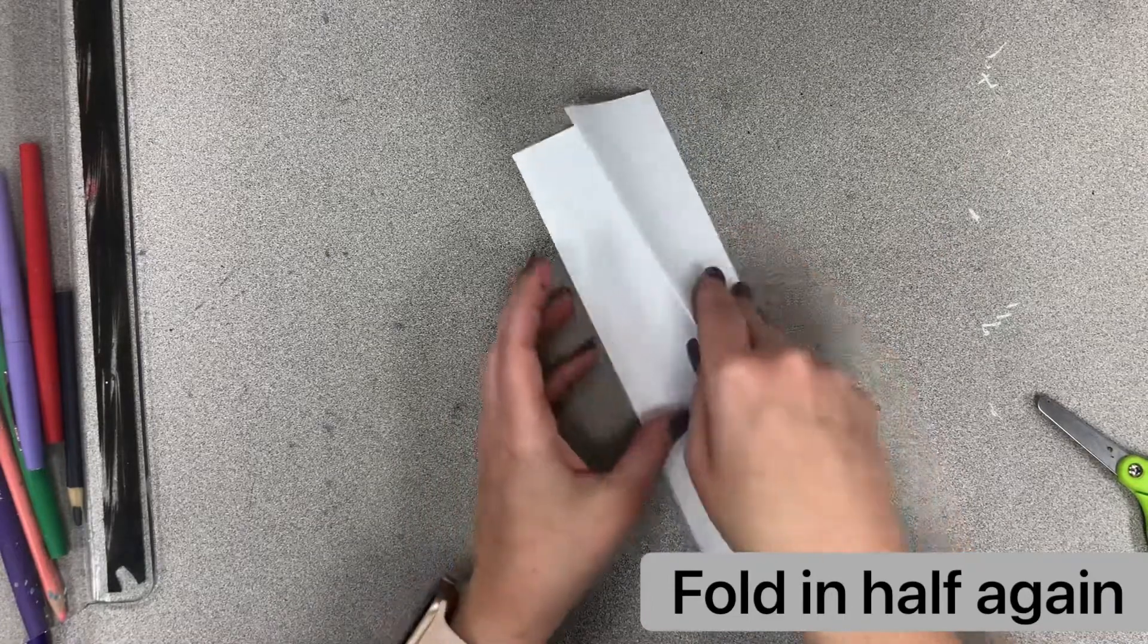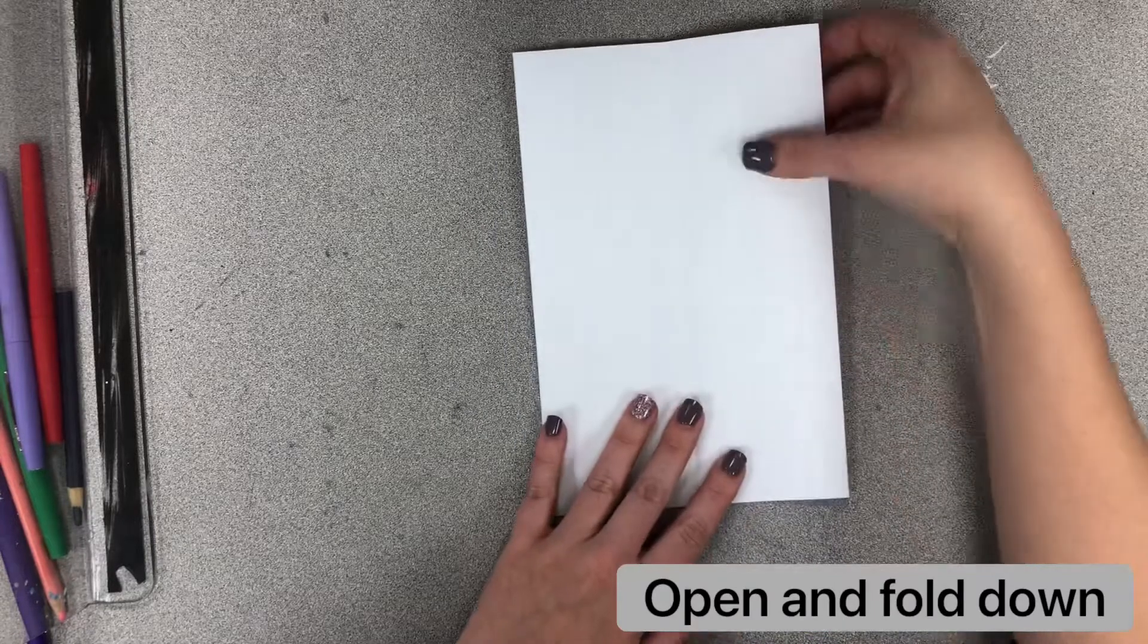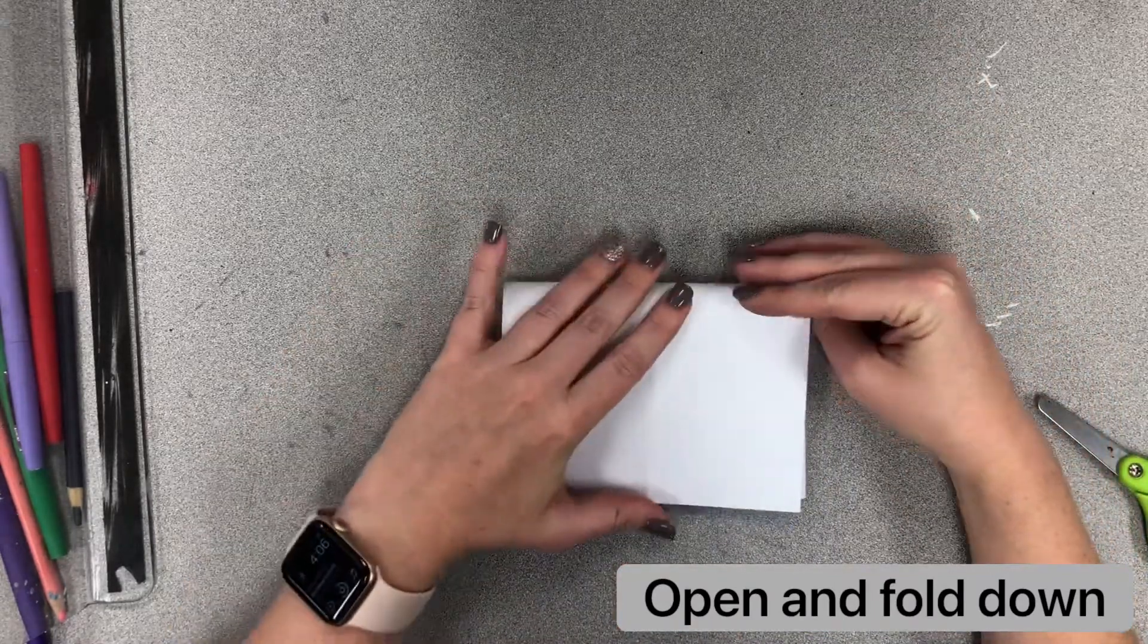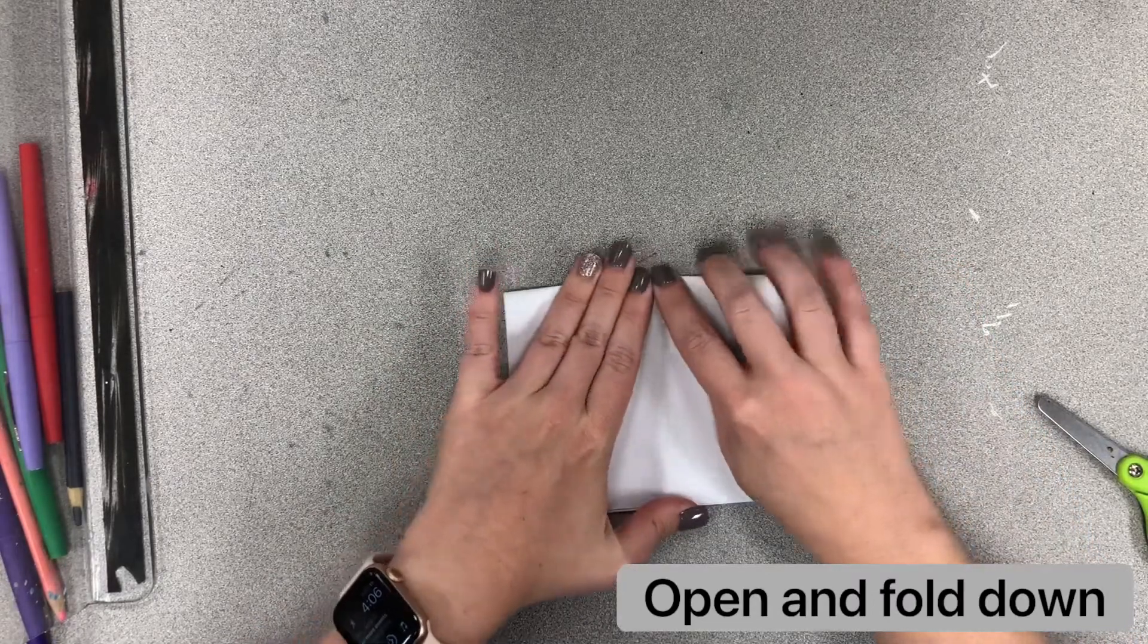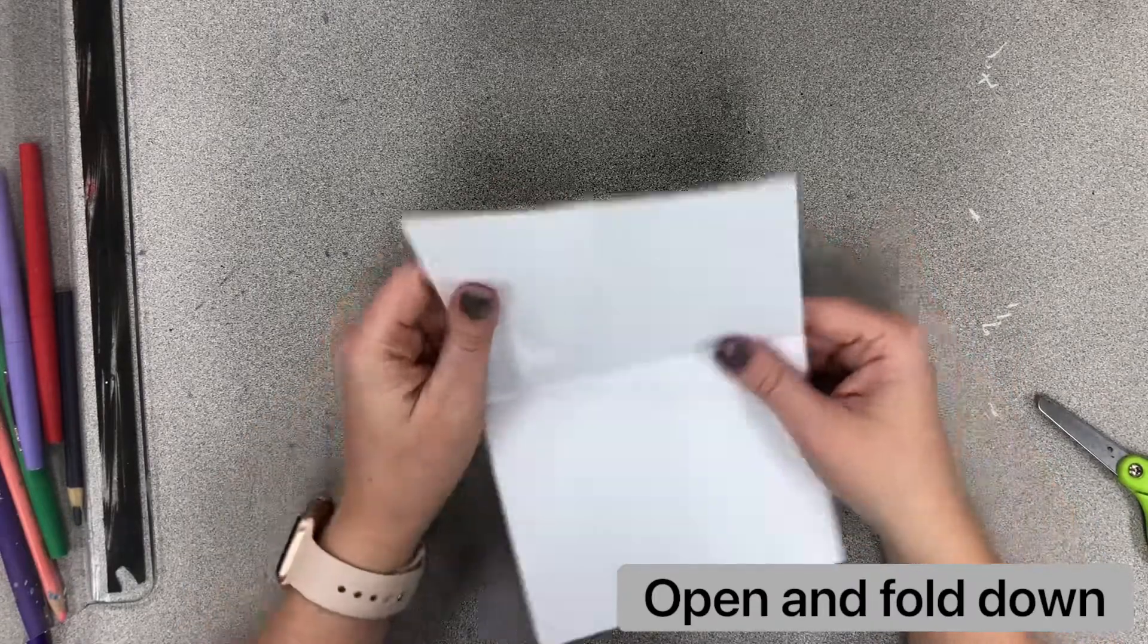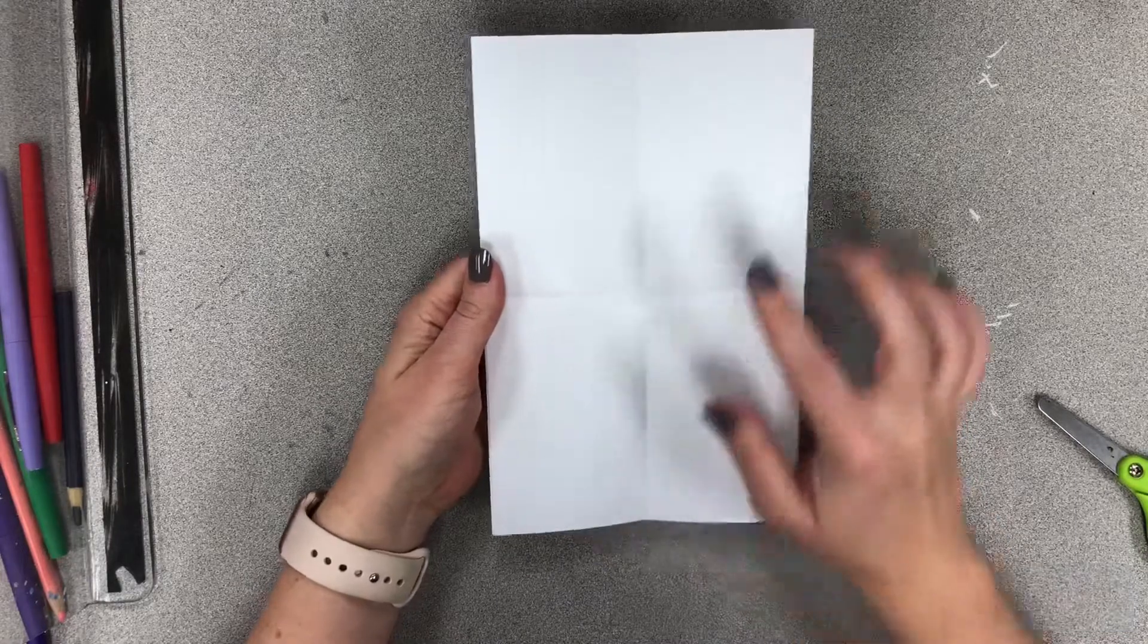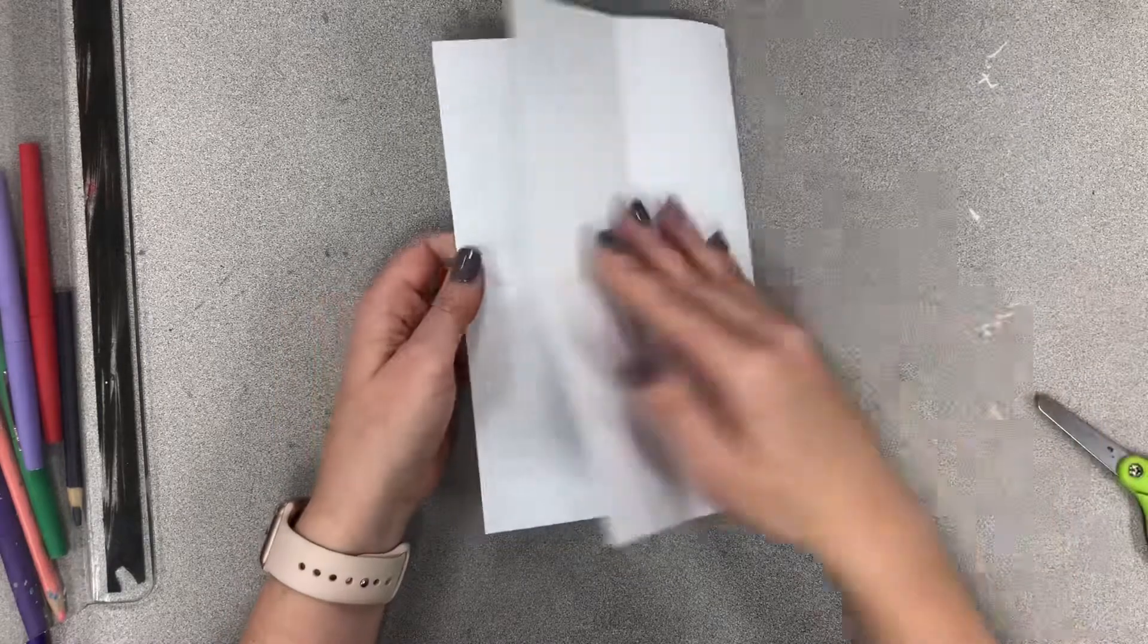So I fold it in half twice. Now I'm going to unfold it once and I'm going to fold it in half in the other direction. Okay. So I should have one, two, three, four squares, and it's still folded in half. I have eight squares total.